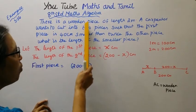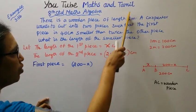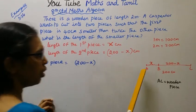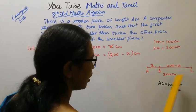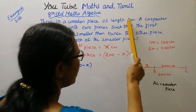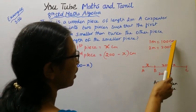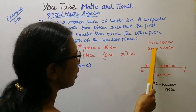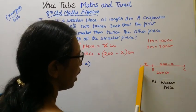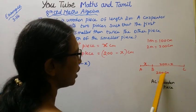There is a wooden piece of length 2 meters. This is a wooden piece — that is 2 meters. We convert: 1 meter is 100 centimeters, so 2 meters are 200 centimeters. The wooden piece is 200 centimeters.